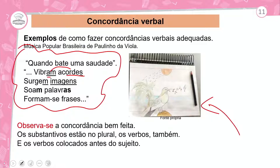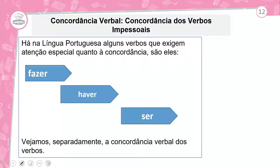A regra geral diz que o verbo precisa concordar com o sujeito em gênero e número. 'Imagens' no plural — o verbo também deve estar no plural: 'surgem imagens'. 'Palavras' também no plural: 'soam palavras'. Agora vamos ver os verbos que exigem atenção especial para a concordância: o verbo fazer, o verbo haver e o verbo ser.